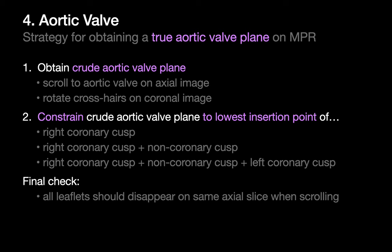A true aortic valve plane is defined by three points in space: the lowest insertion point of the right coronary cusp, the lowest insertion point of the left coronary cusp, and the lowest insertion point of the non-coronary cusp. Your strategy is to constrain your crude aortic valve plane to one of these points, then two of these points, and then three of these points.